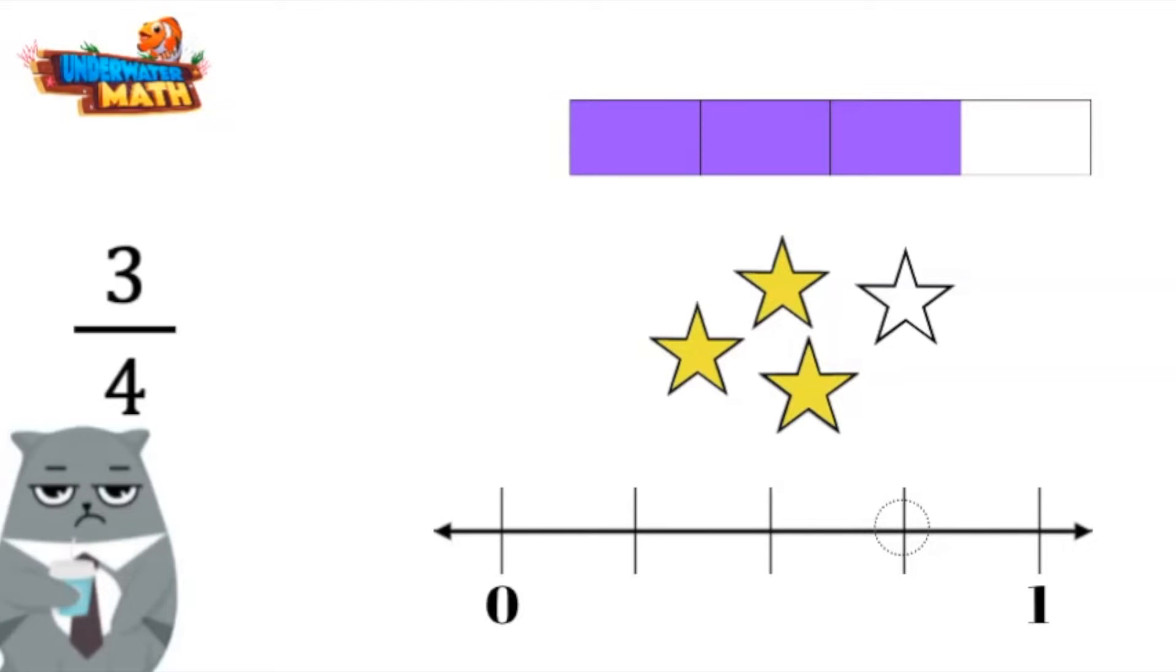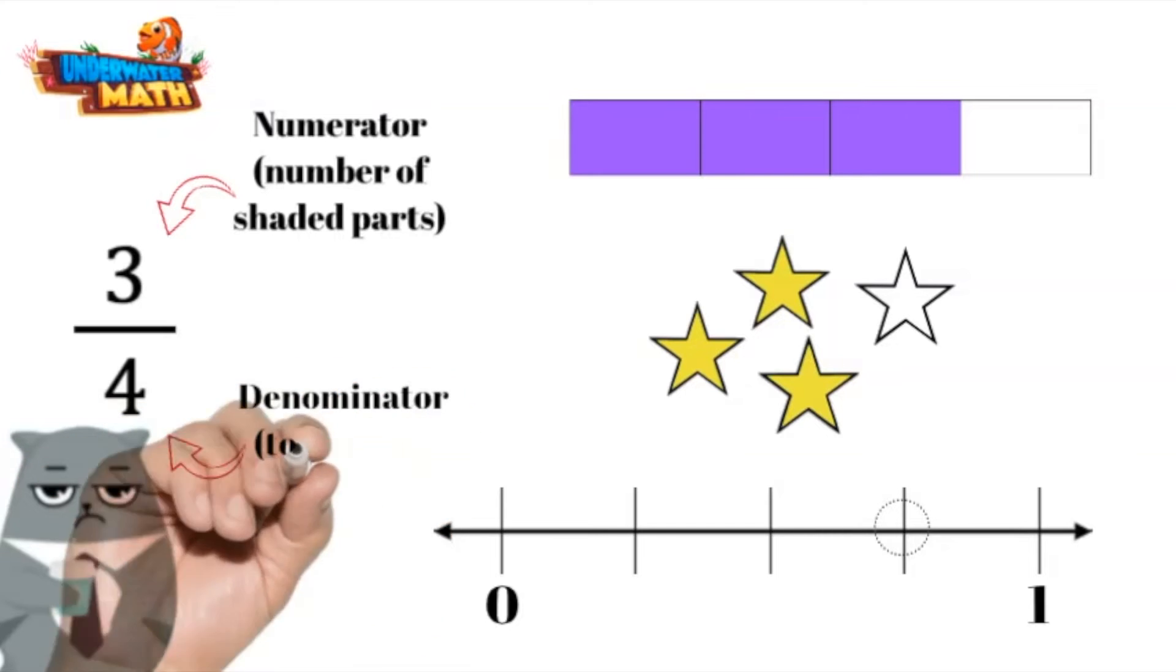How do you know? The numerator represents three parts shaded and the denominator represents the four total equal parts.